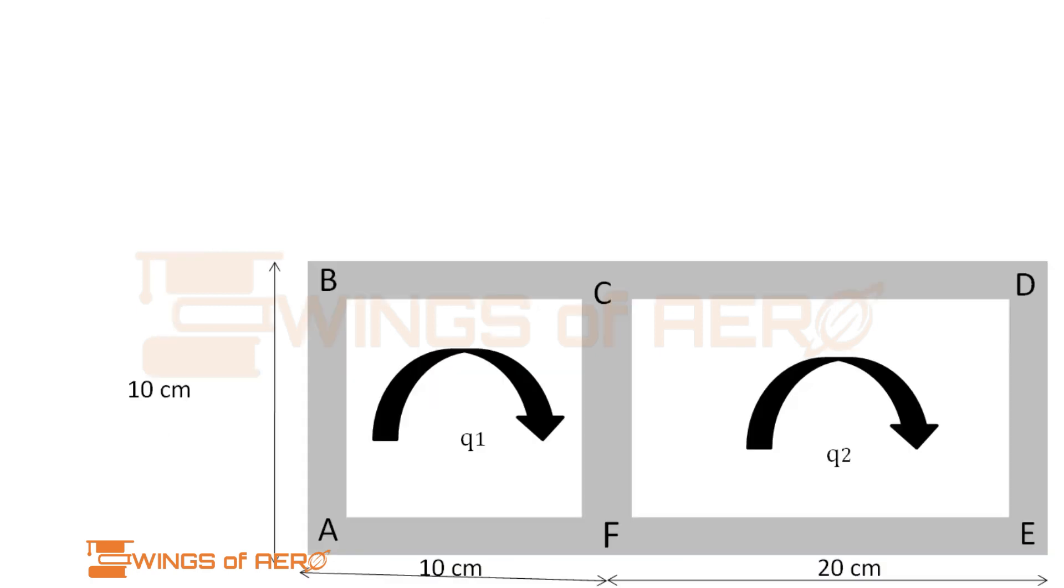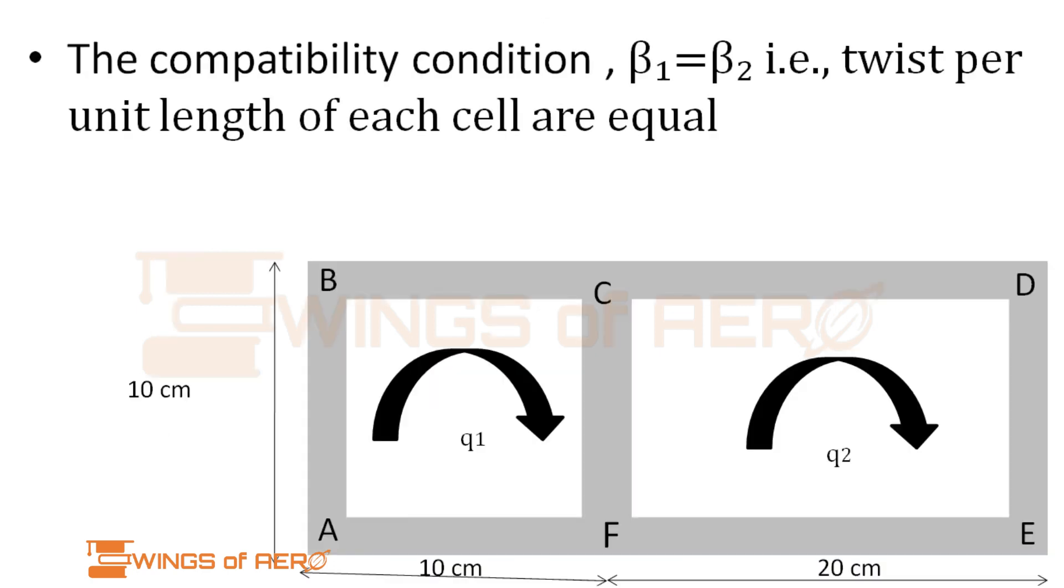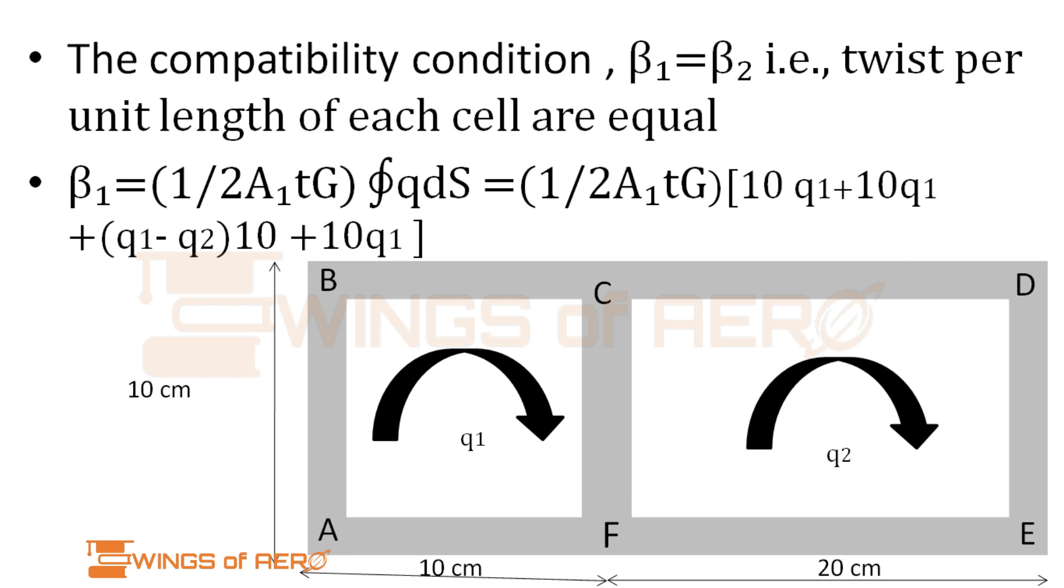Now we know the compatibility condition: beta 1 equals beta 2, that is, twist per unit length of each cell are equal. Recalling the beta 1 formula: beta 1 equals 1 by 2A1tG closed integral of q ds. Here t is outside because the thickness of each member is the same. Applying this integral, inside we have q1 everywhere. Starting from point A: AB shear flow is q1 and the length is 10, so q1 into 10. Then BC is q1 again, length 10.